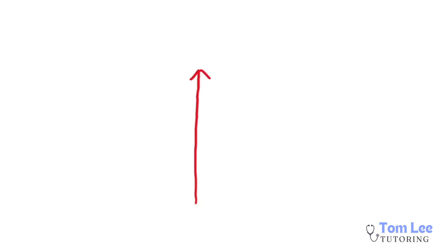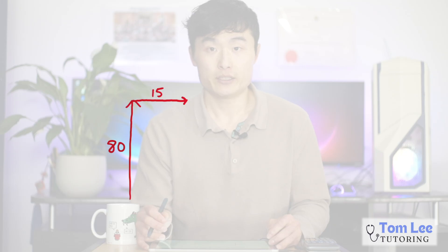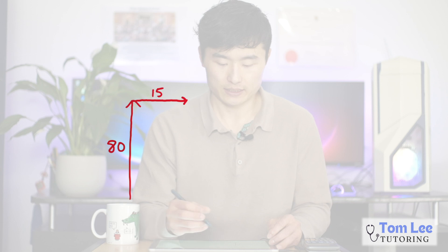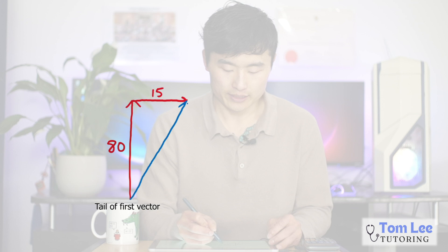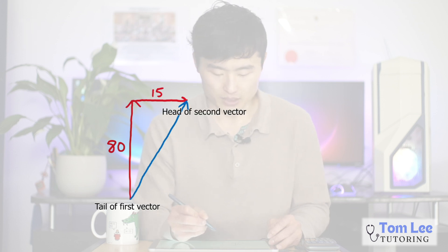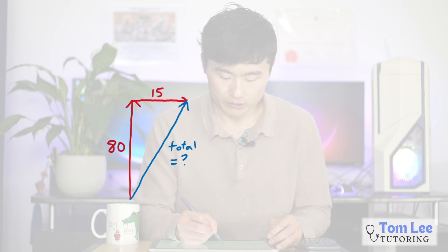To do that, we will draw these two vectors. The first vector is going north and it has a magnitude of 80, and then the second vector will be going east and it will have a magnitude of 15. Notice how I drew the second vector originating from the head of the first vector. Now to find the total, we will connect the two vectors by starting at the tail of the first vector and joining it to the head of the second vector like so. This line will represent our total velocity, which is what we want to find out.